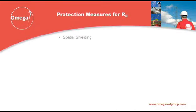Some of the measures that can be used to reduce or mitigate the effects of LEMP and consequently reduce the R2 risk of loss of service to the public will already be in place by virtue of the building fabric or the nature of the building services. The LEMP effect will be attenuated somewhat if the structure has a steel, reinforced concrete or other conductive frame, and this frame is earthed.